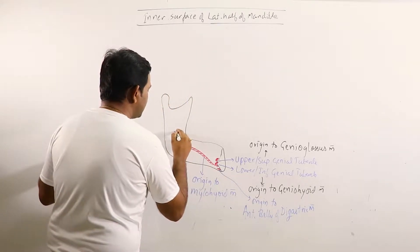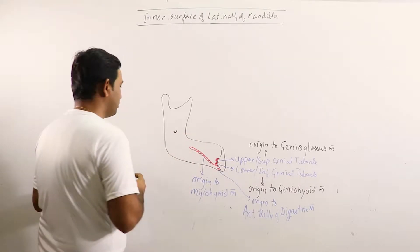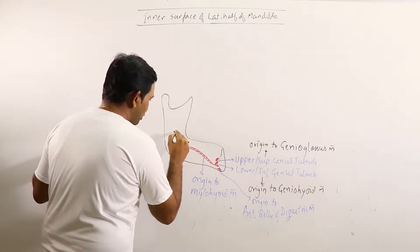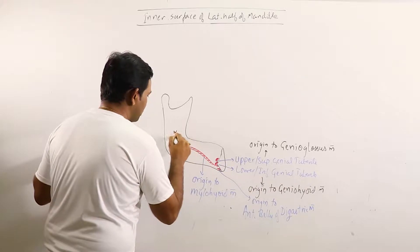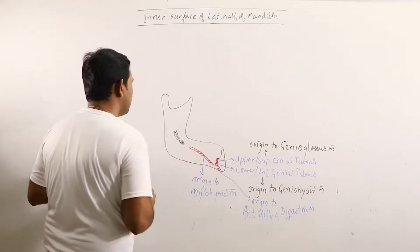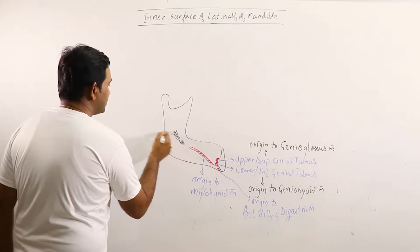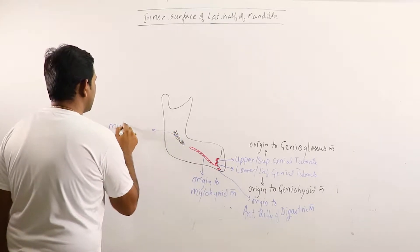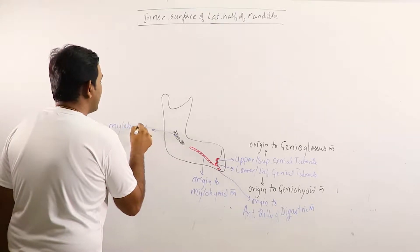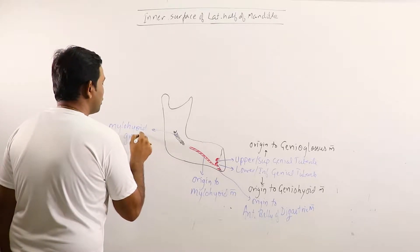Now this is the mandibular foramen. We can observe the mylohyoid nerve. This is mylohyoid nerve.